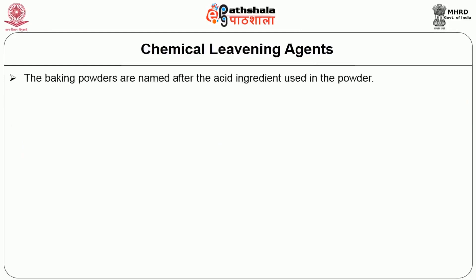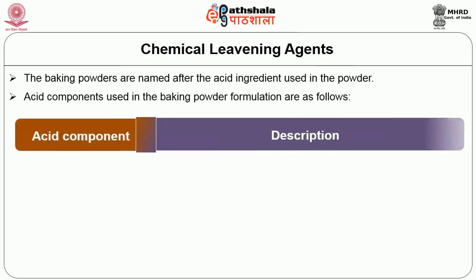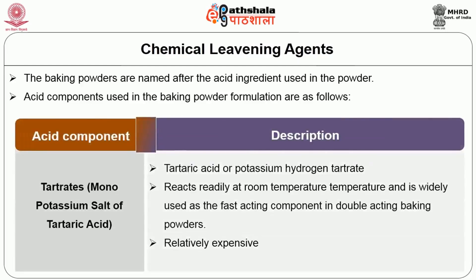Baking powders are named after the acid ingredient used. The acid components used in baking powder formulations include tartarates — the mono potassium salt of tartaric acid, also known as potassium hydrogen tartrate. Tartarates react readily at room temperature and are widely used as the fast acting component in double acting baking powder. They are relatively expensive.